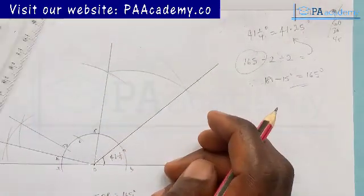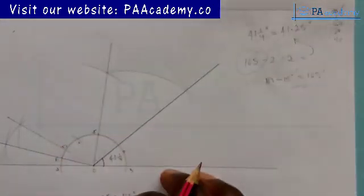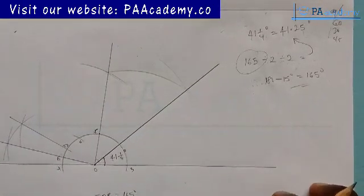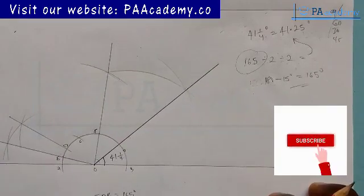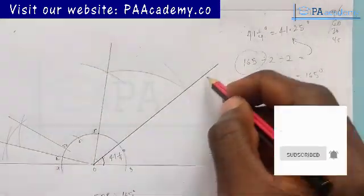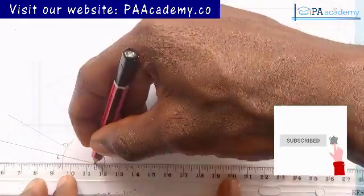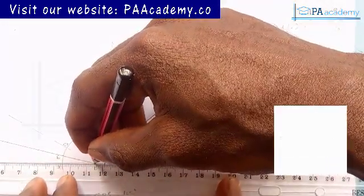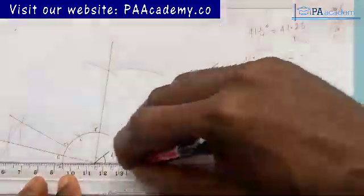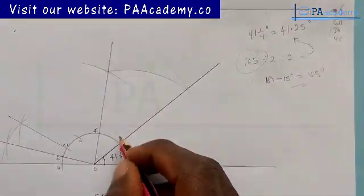So one thing you also need to take note of is, every other thing that we've done here, you have to do them with construction line, which is a faint line. The only line that should be very visible or to be bold is this particular line. And then alongside this, just from point O, you can extend it out. So which is to show that this particular angle here is the required angle.